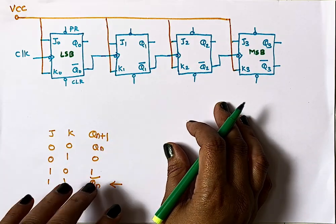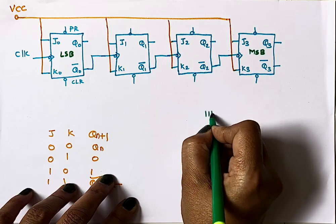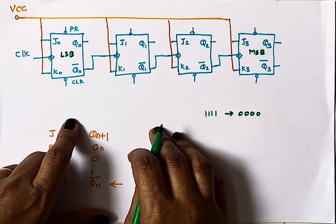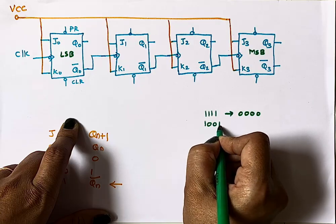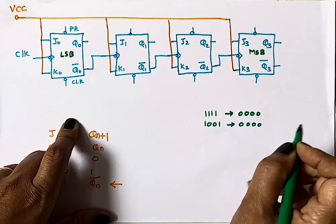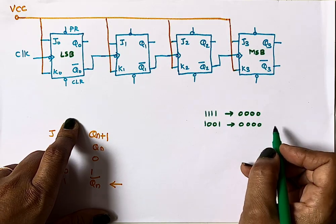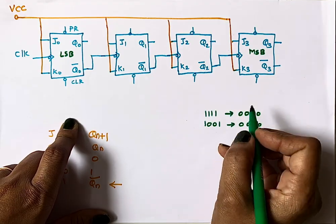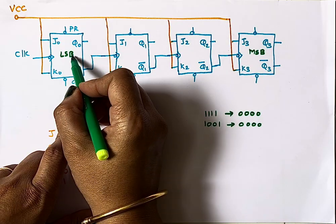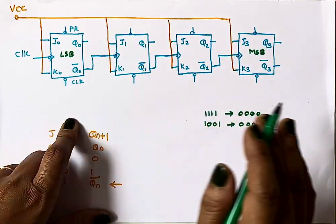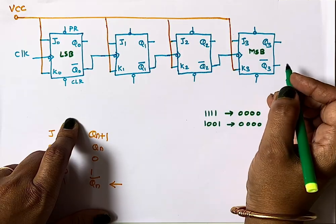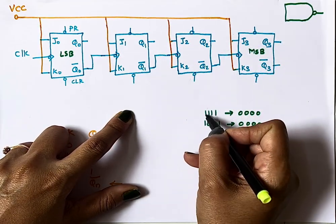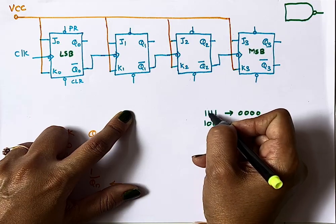If preset and clear are not connected, the counter will count from 1111 (15) to 0000. But we want it to count from 9 (1001) to 0. After 0, naturally 1111 will appear. Since we want all outputs to be 1 at that moment, we take a NAND gate and connect Q0, Q1, Q2, and Q3 to its inputs.